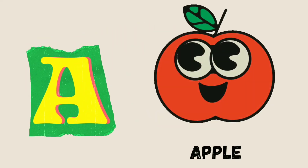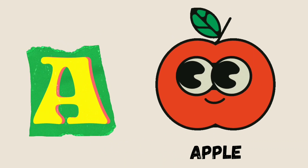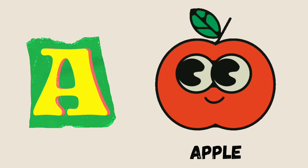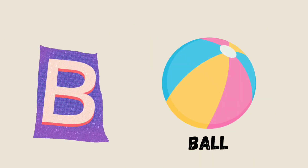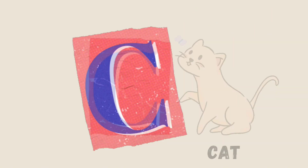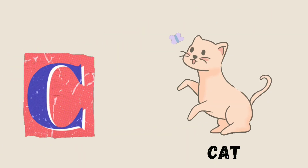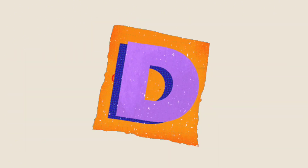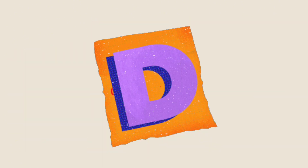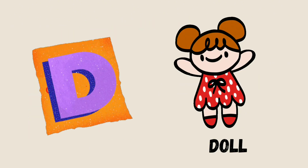A is for Apple, A-A-Apple. B is for Ball, B-B-Ball. C is for Cat, C-C-Cat. D is for Doll, D-D-Doll.